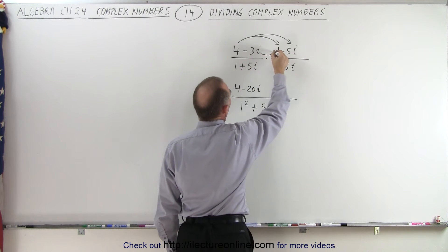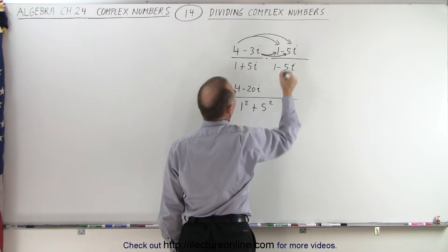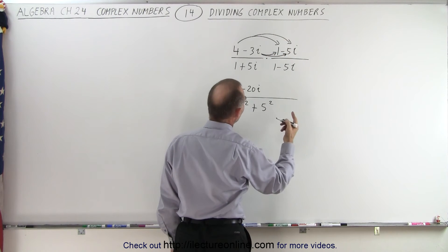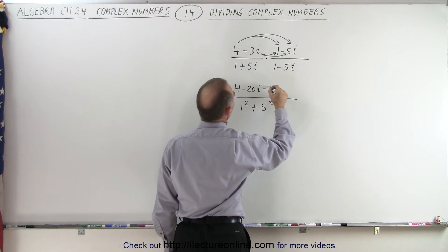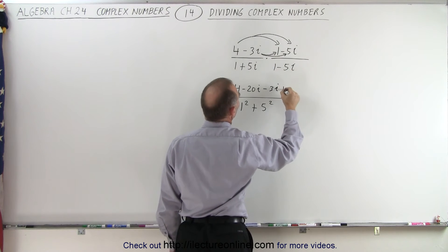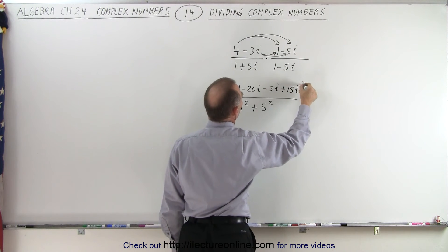And then we have to multiply the minus 3i times 1 and the minus 3i times the negative 5i. So it begins minus 3i and minus times the minus is plus 15i squared.